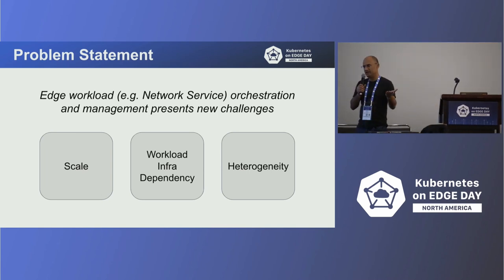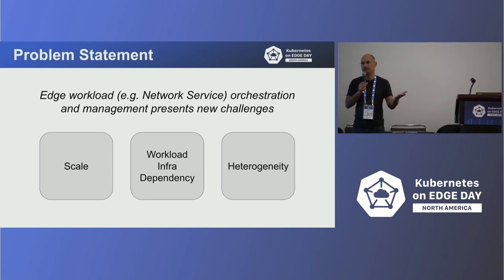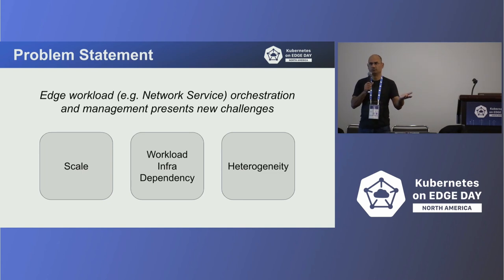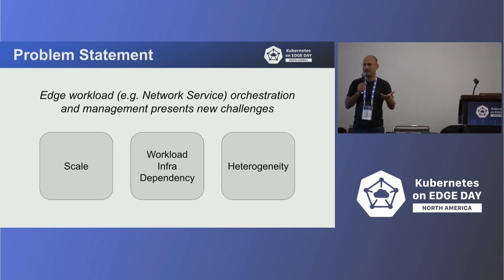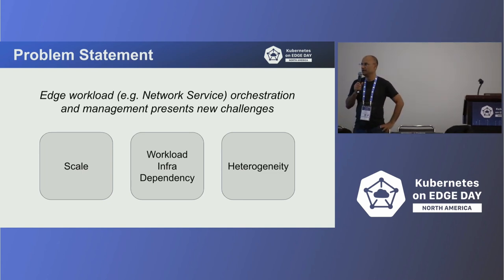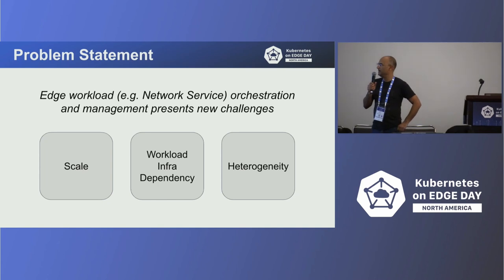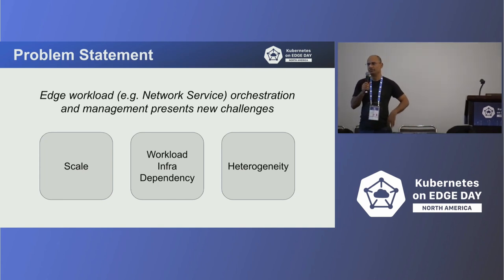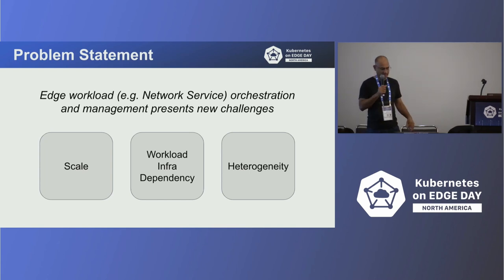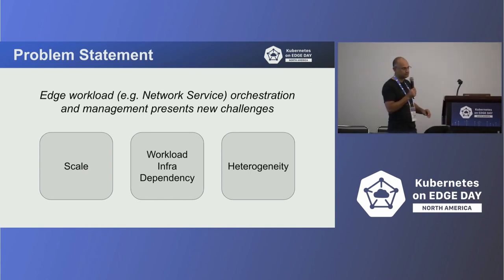The third is heterogeneity. The edge is heterogeneous. There are hyperscalers providing edge solutions, software companies providing CaaS solutions for private edge implementations — lots of compute, CaaS, storage, and networking. If you look at the diversity, it's massive.